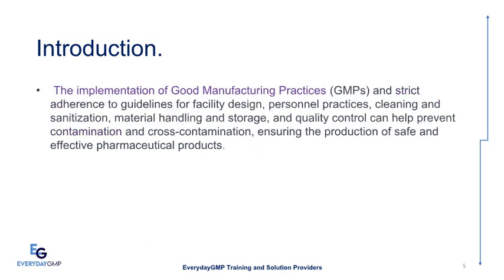The implementation of good manufacturing practices, GMPs, and strict adherence to guidelines for facility design, personnel practices, cleaning and sanitization, material handling and storage, and quality control can help prevent contamination and cross-contamination, ensuring the production of safe and effective pharmaceutical products.